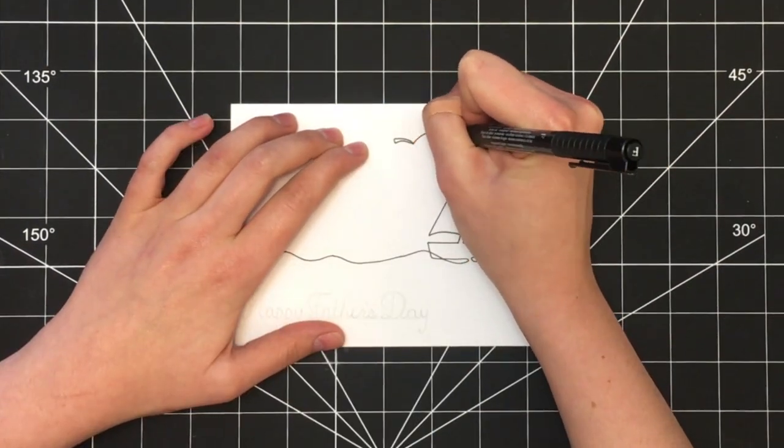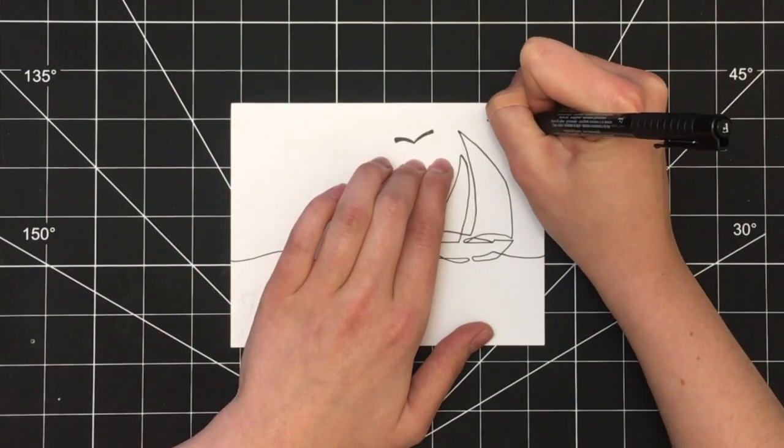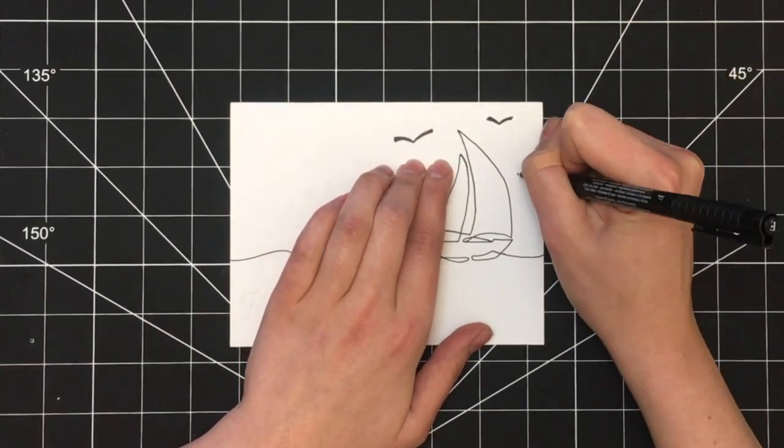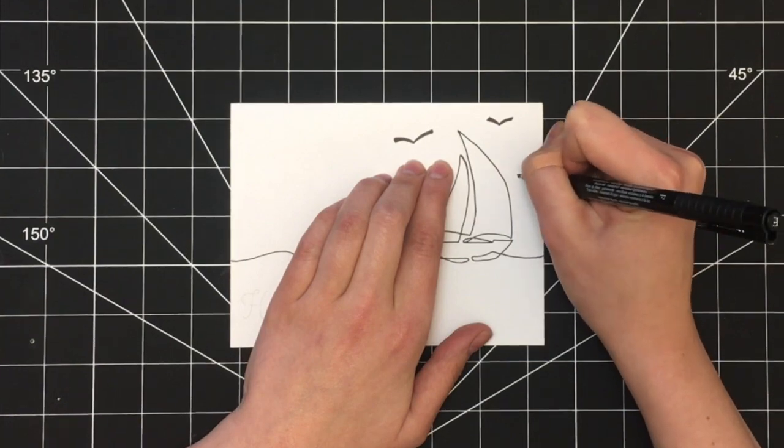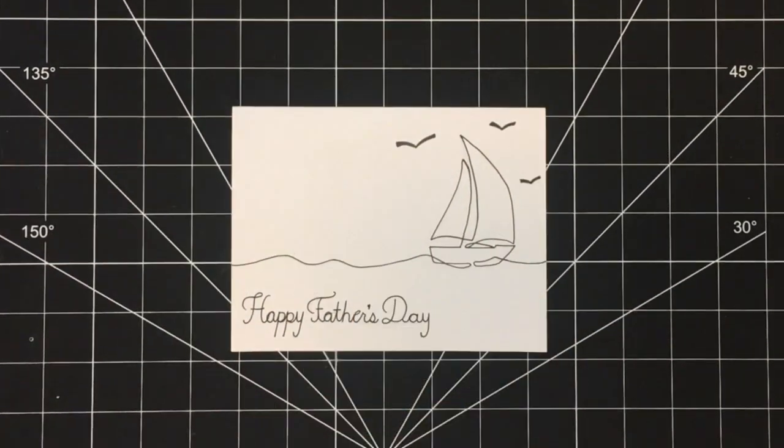Then I moved on to the birds and I colored those in. You could easily customize this design by adding fewer or more birds. And then finally I went down to the text and I traced over that as well.